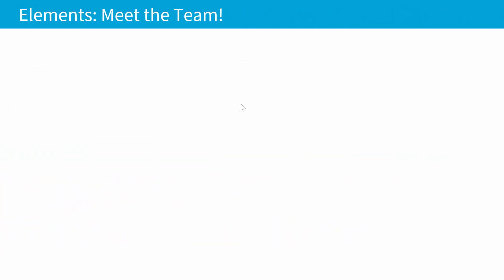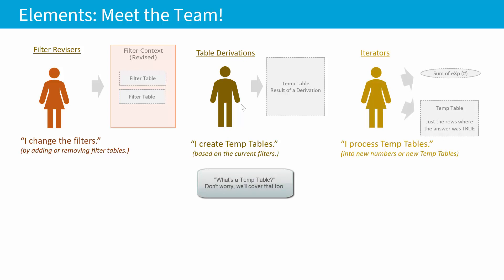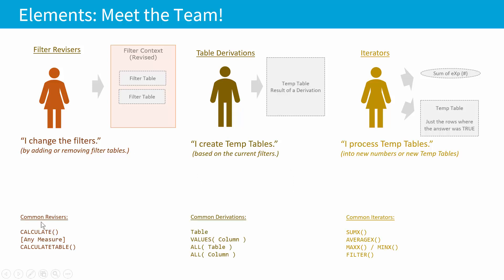Okay. So these elements, what are they? Pretty simple. There's only three of them. First element, filter revisors, they change the filters, they add or remove filter tables, they just change what filters are in place. Second element, table derivations, they create temp tables based on the filters. And then thirdly is iterators, they process temp tables into new numbers or even new temp tables. And that's it. So the examples of these that we're going to use, the most common examples, these the ones that we're going to use in the class are written down here, this is what you would actually type out of your code. And with these 12 things, these 12 combinations of functions and references, we're going to be able to write all kinds of intermediate DAX with just these 12, no additional stuff necessary.